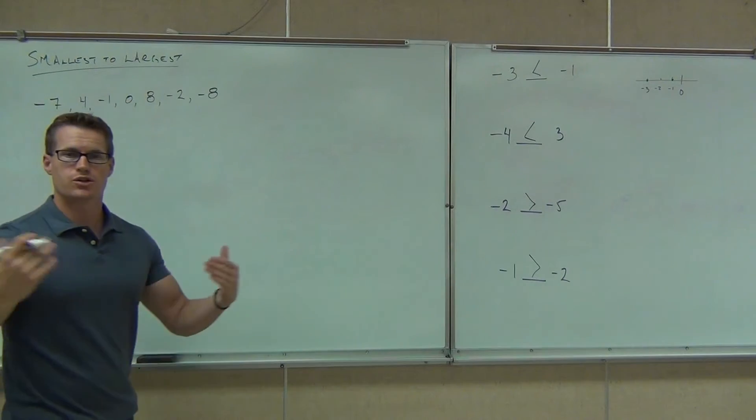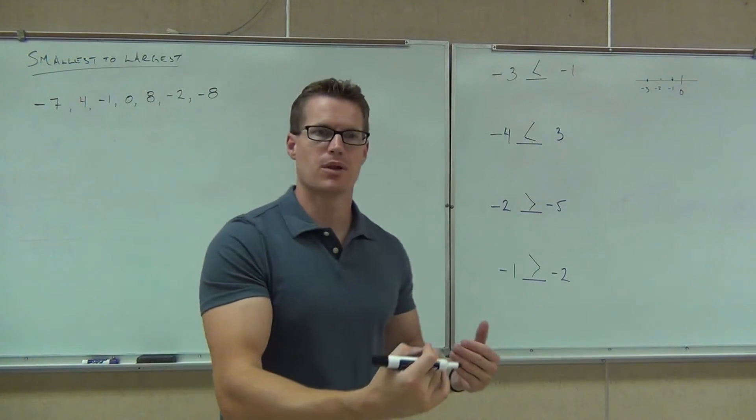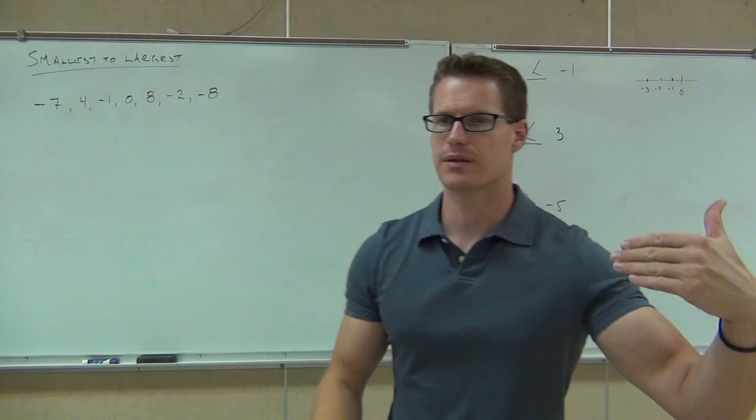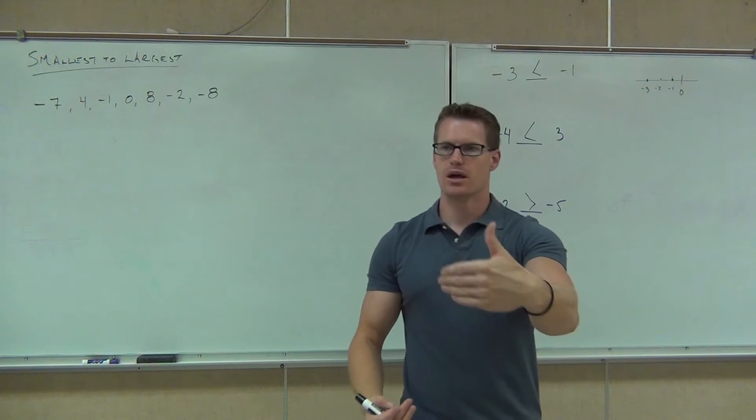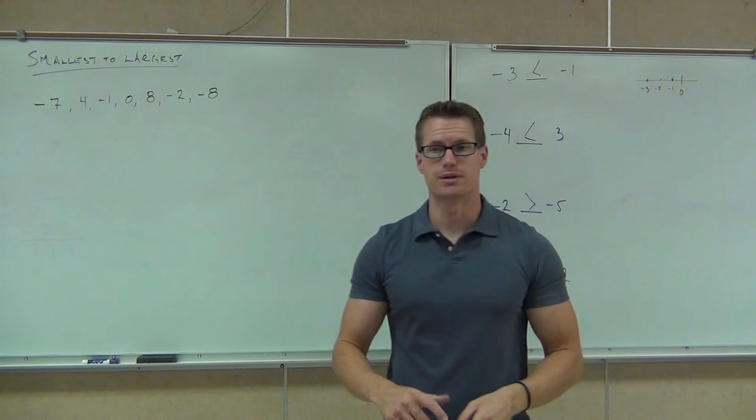If you have trouble ordering numbers, you can just draw a large number line, put them all on the number line, and read the line from left to right. That would tell you what's the smallest numbers and what's the sequentially larger numbers.